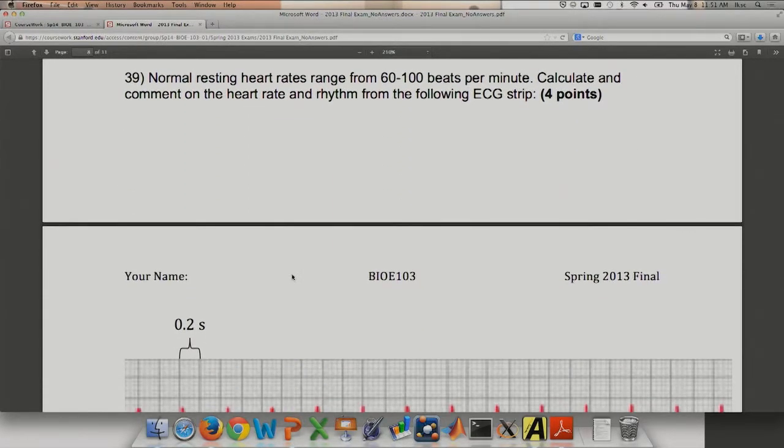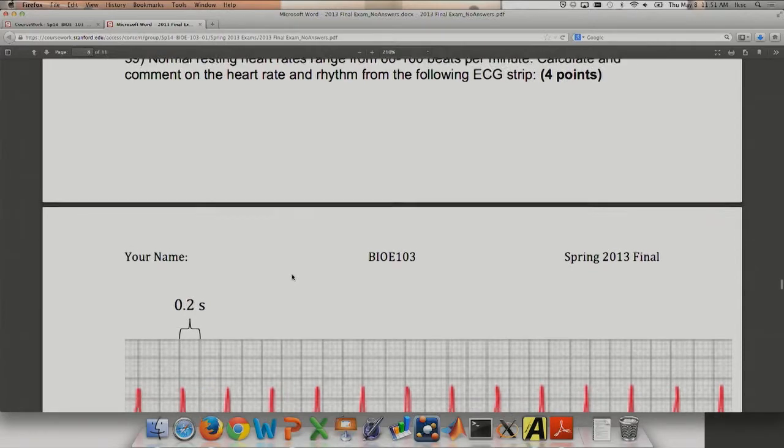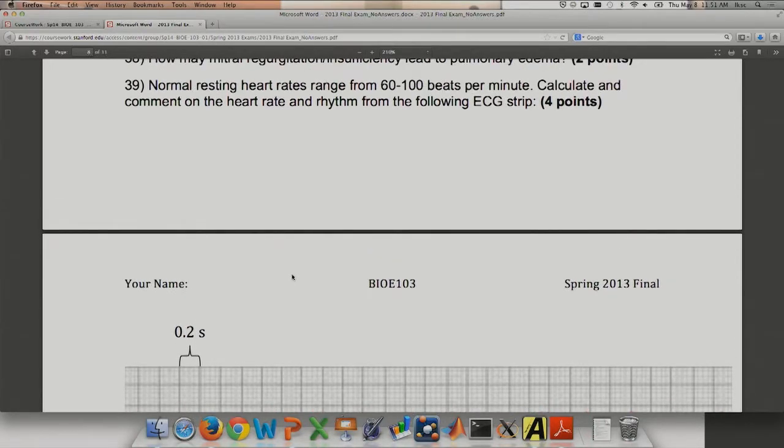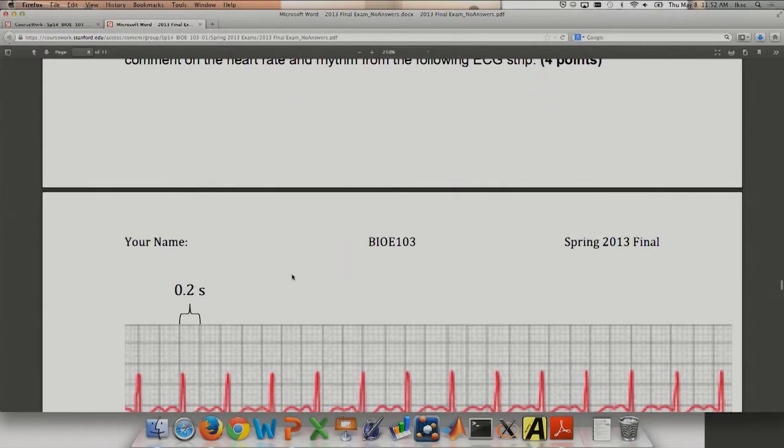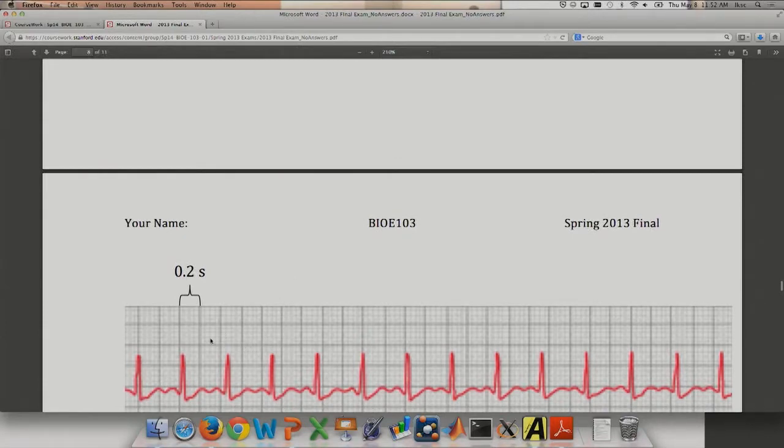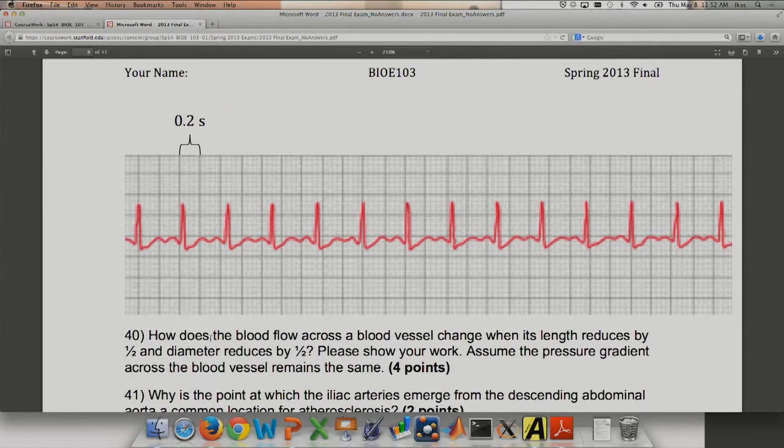The next question is comment on the heart rate and rhythm from the following ECG strip. We did not teach you how to comment on rhythm, so forget that. But to compute heart rate, it's actually fairly simple. You can see the time between the two impulses, and the calculation would just be about 150 if you work it out. But you don't have to do this. This is not covered this year.